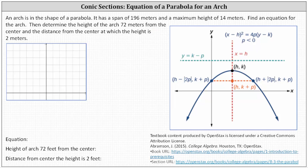To begin, we can represent the arch using a parabola that opens down, as pictured here on the right. We'll let the y-axis be the axis of symmetry. And because the maximum height is 14 meters, we'll let the point (0, 14) be the vertex of the parabola.